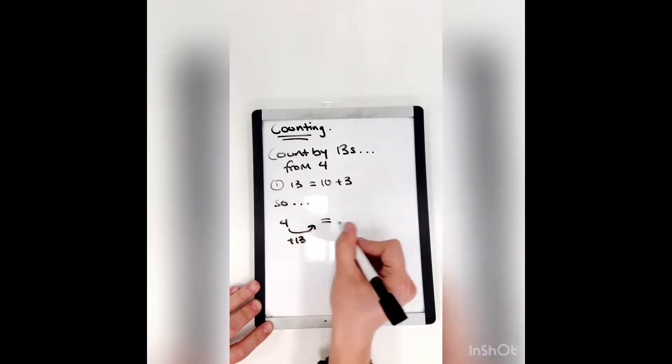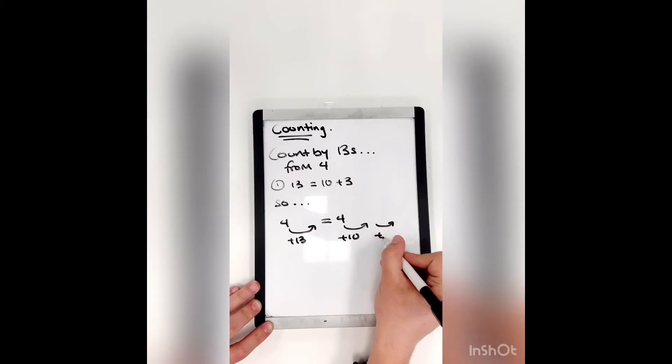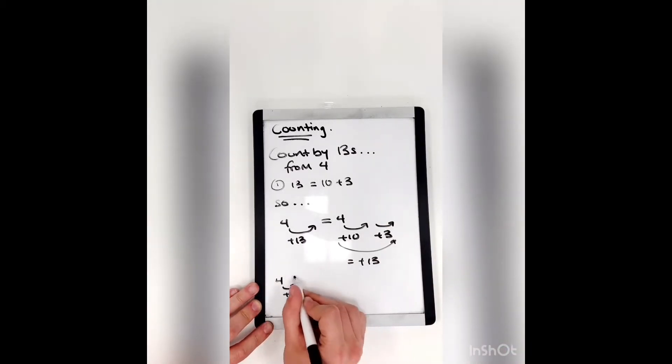First, thirteen is ten plus three. So four plus thirteen is the same as four plus ten, then plus another three. That's plus thirteen. So four plus ten is fourteen. Plus three is seventeen. That's plus thirteen.